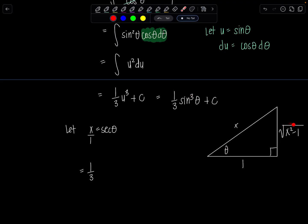So sine is the ratio of the opposite side over the hypotenuse. So that would be square root of x squared minus one over the hypotenuse is x. This all gets cubed and then I just have plus c.